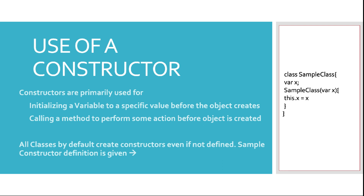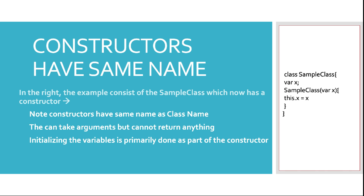Constructors are primarily used for initializing a variable. For example, if I have a variable X present and I want to give it a value so that when the class object is initialized it gets initialized with a specific value, I use the constructor to present my class object with a value that I can pass from any method. As you can see in the example on the right, the class name is 'SampleClass' and the constructor has the same name.